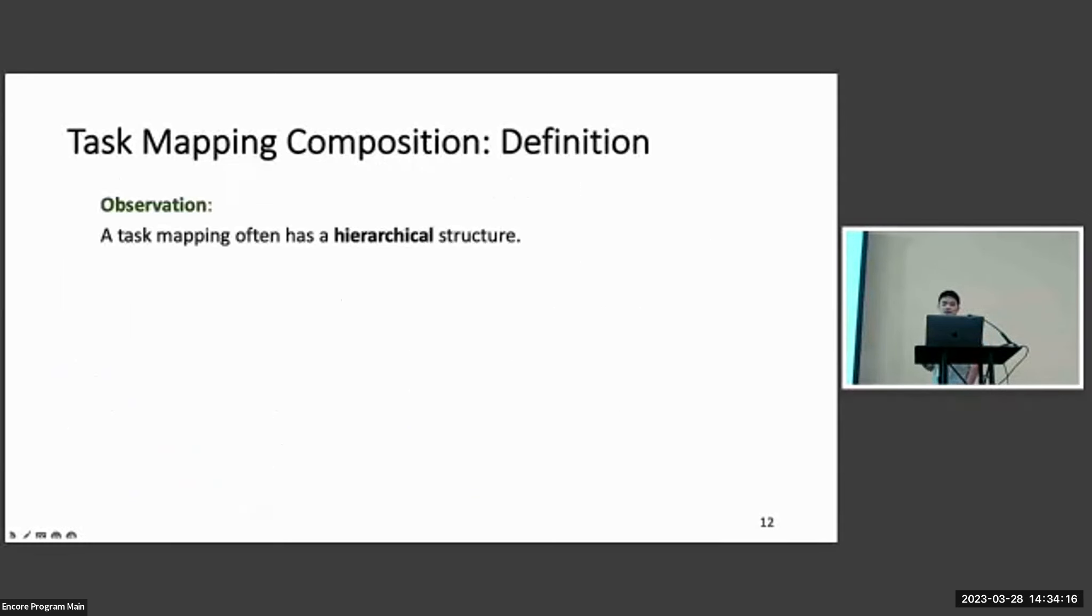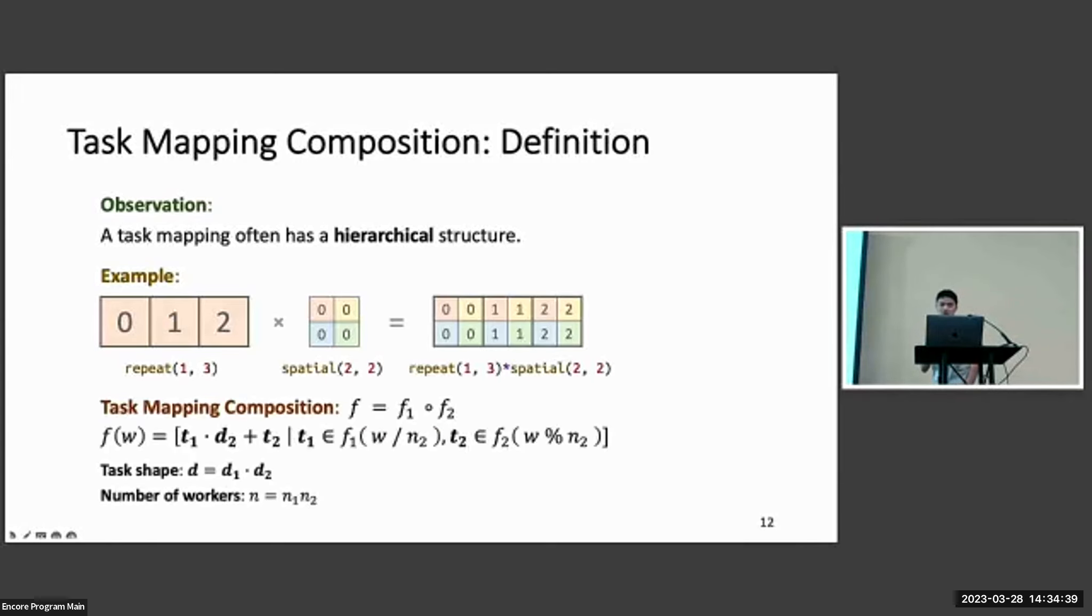We observe that the task mapping used in a tensor program usually has a hierarchical structure. For example, for the repeat 1-3 task mapping, we have three tasks here and one worker. If each task has some subtasks, and each worker has some sub-workers, and their relationship can be described as another task mapping, we can compose these two task mappings together to get a composed task mapping. This task mapping composition operation can be used to generate new task mappings from the existing ones.